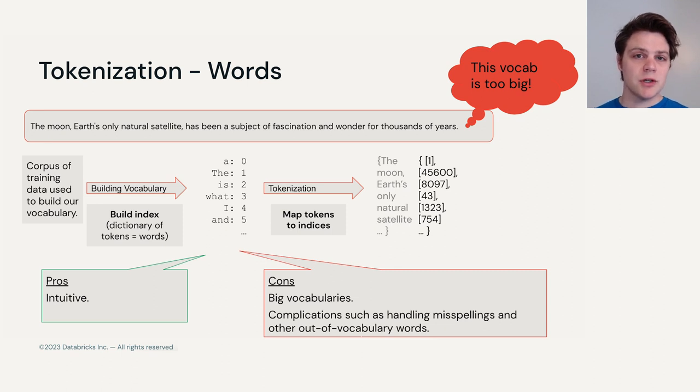So the process of tokenization is twofold. Firstly, we create a vocabulary of all of the different tokens that we can see in our training data set. So if we have the English dictionary, for example, we could take every word in that dictionary and convert that into our vocabulary so that every word has an associated number.